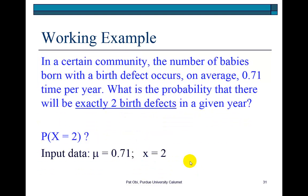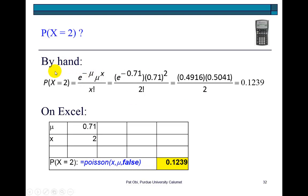Here's a quick example. It says in a certain community, the number of babies born with a birth defect occurs on average 0.71 times per year. What then is the probability that there will be exactly two birth defects in a given year? So here are our two input data points: the mean of 0.71 and the number of successes of 2. We define the formula and substitute in the values. The probability that there will be exactly two defects is equal to 0.1239.